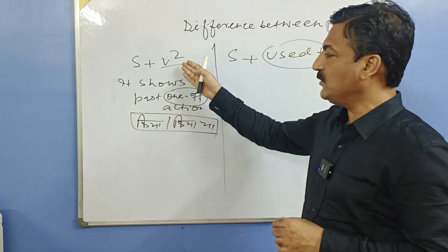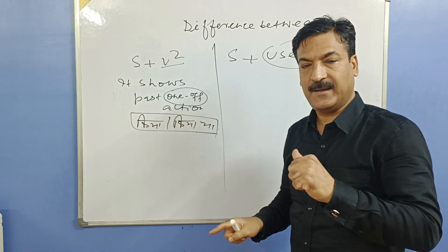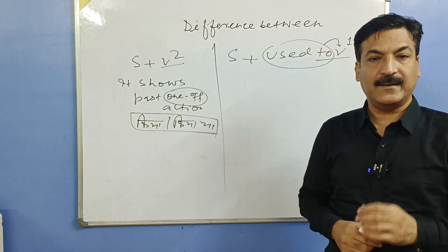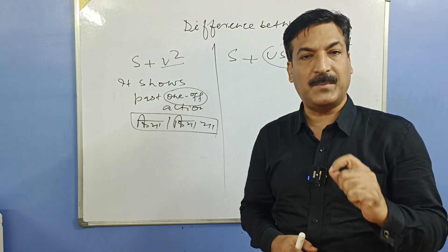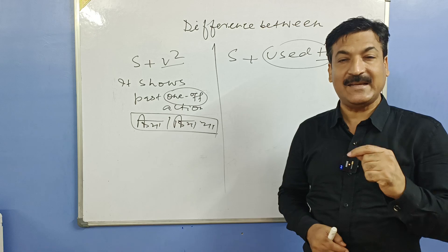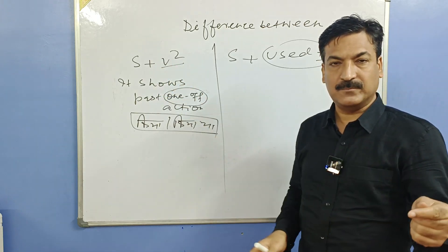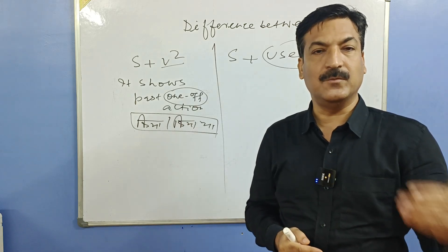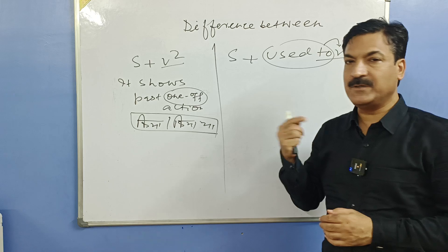Meinne tumhe dekha tha — I saw you. Toh jab kabhi bhi past mein one-off action ki baat karein, V2 use karein, aur Hindi mein hoga: kiya ya kiya tha, aaya ya aaya tha, gaya ya gaya tha. Meinne tumhara intezaar kiya tha — I waited for you. Usne tumhe call kiya tha — he called you. Meinne tumhe jaane ko kaha tha — I told you to go.